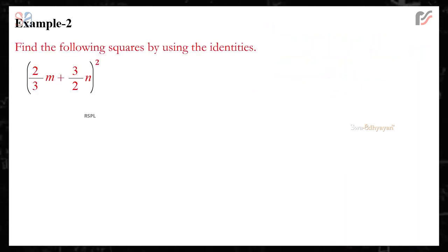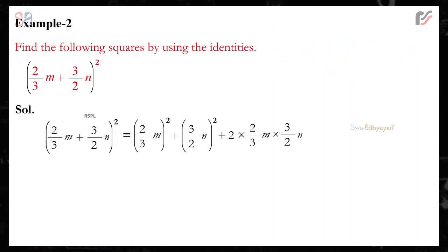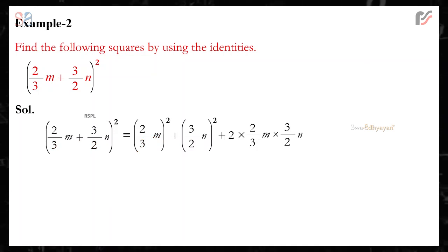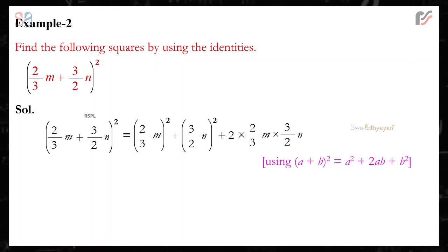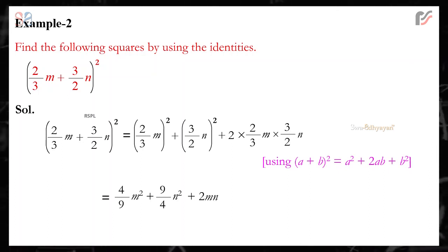Example 2: Find the following square using the identities. (2/3m + 3/2n)². Solution: (2/3m + 3/2n)² = (2/3m)² + (3/2n)² + 2 × (2/3m) × (3/2n), using (a + b)² = a² + 2ab + b², which equals 4/9 m² + 9/4 n² + 2mn.